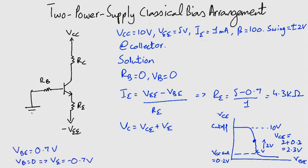VBE is 0.7 volts, and since VB equals 0, VE comes out to be minus 0.7 volts. So VCE is 1.6 volts.